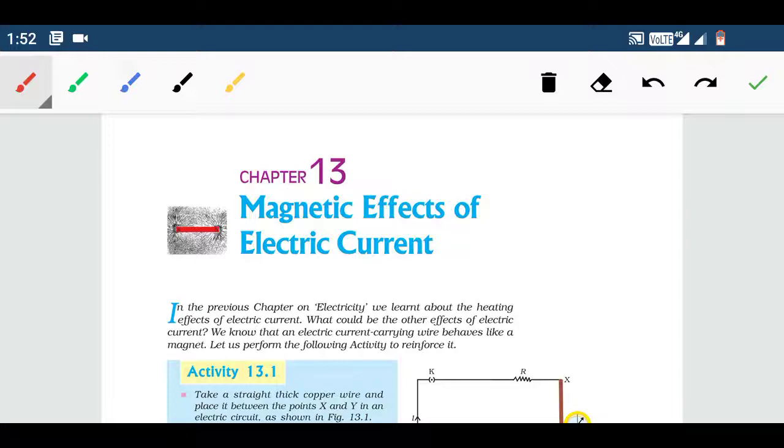But due to the lockdown, this is the online class, the very first online class. Today I will discuss chapter number 13. There are some effects of electric current. If you remember in the school, there are some effects of current electricity. Heating effect is one of them, magnetic effect is one of them. This whole chapter is dedicated to the magnetic effects.